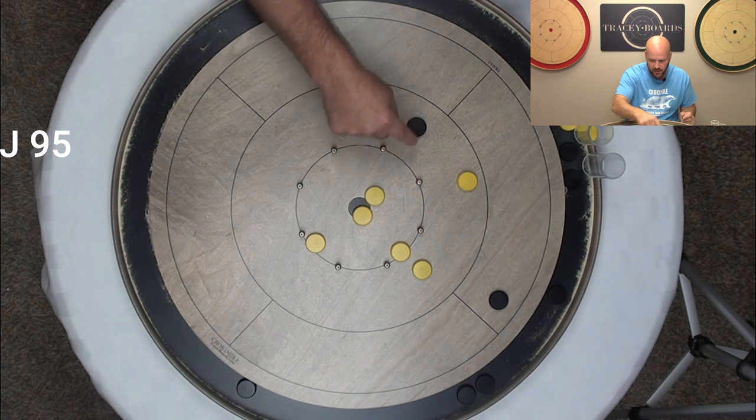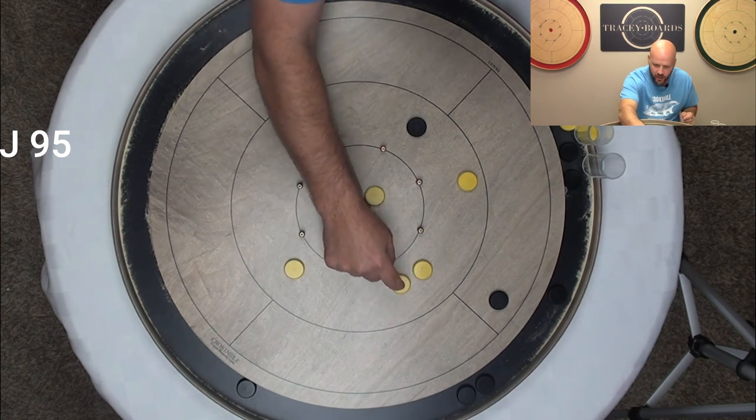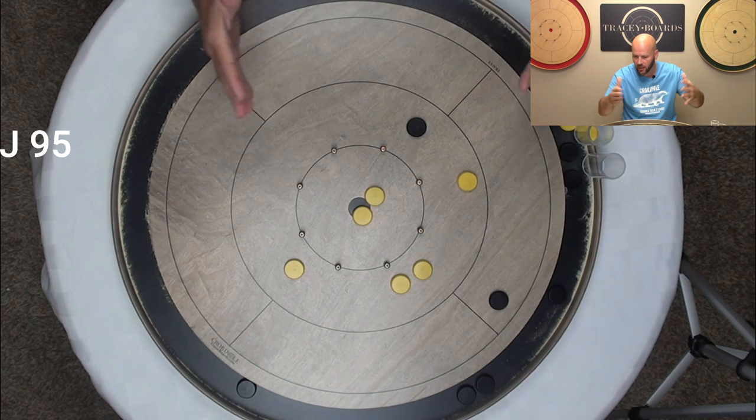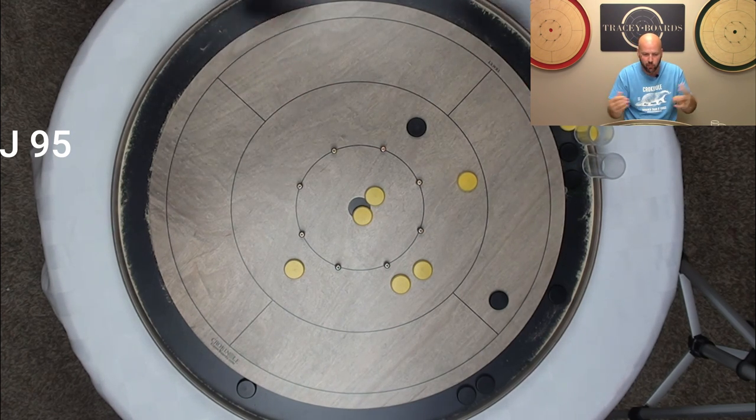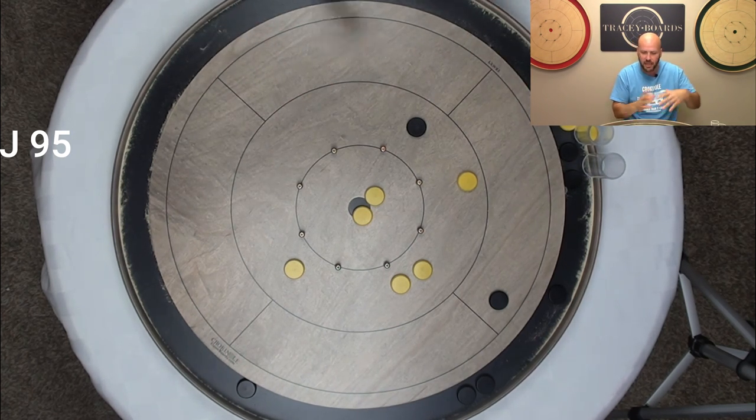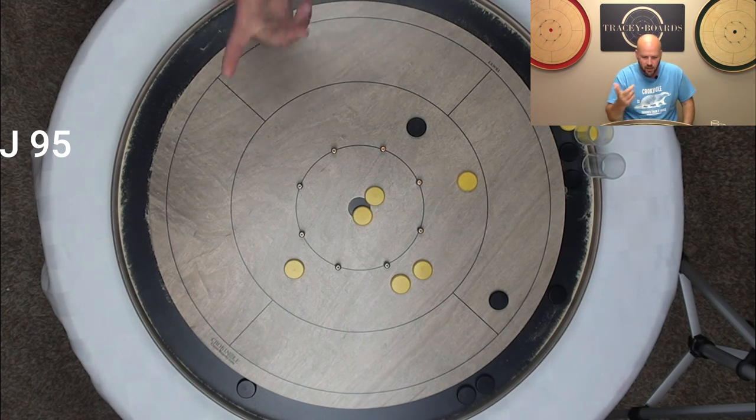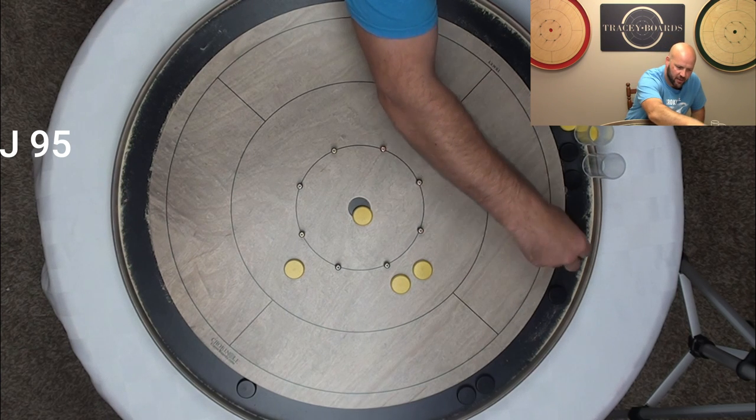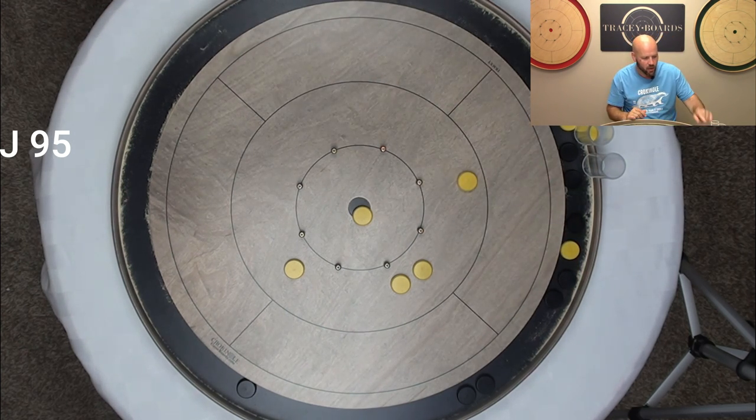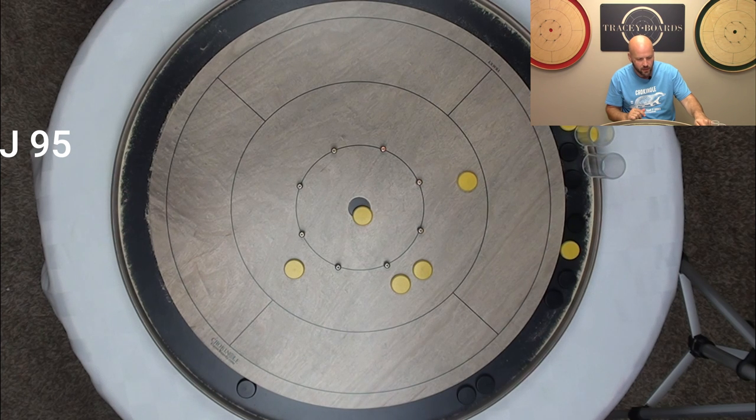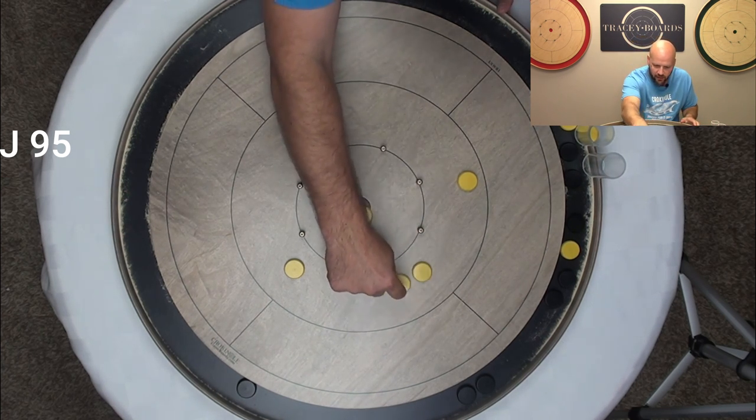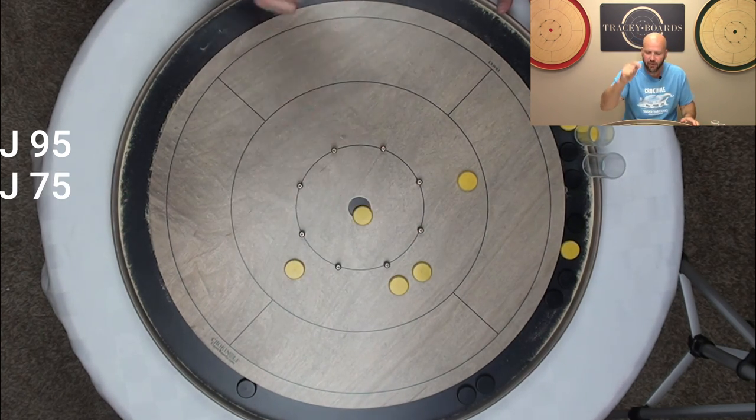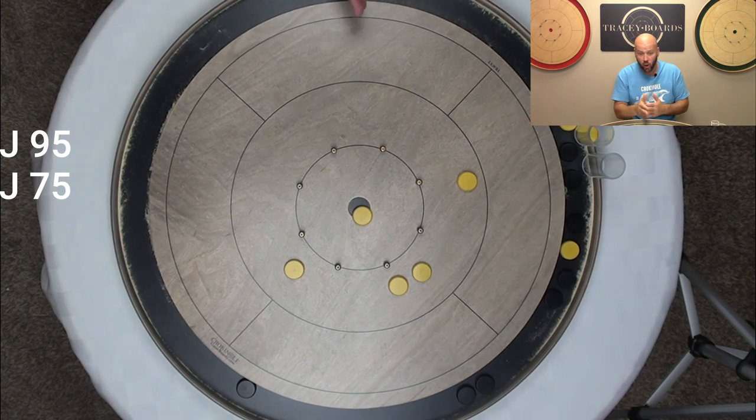When keeping score I encourage you to start with that. Anything is touching the line you move it to the right point region that it belongs in. Then cancel points. So I'm going to take one of my 15s and use that to cancel the 5 and the 10. So now what's left on the board is my score. I've got a 20 here. 30, 40, 50, 60, 75. Not as good as last time but honestly for how challenging this drill can be, I'm still very happy with that score.